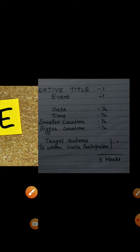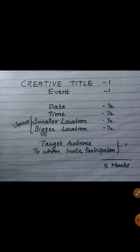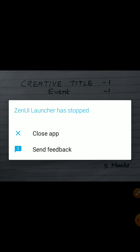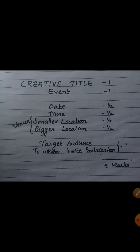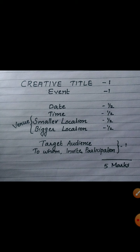Let us see the marks division. First of all, a creative title — when we write the notice we must write a creative title, and for that creative title one mark is given. The second component is the event. We must clearly mention the event of the notice, and for the event also one mark is provided.